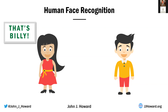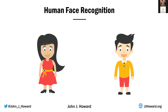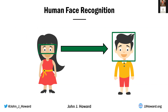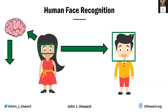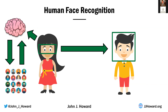First off, when Billy enters the room, your eyes looked at Billy's face and sent that image to your brain, and your brain then compared it to face images that you had stored up in your memory, and it found Billy, and it told other parts of your brain about that. All of this really happens without you even thinking about it or recognizing that you're doing it, and it's pretty cool that our brains have evolved in this way.